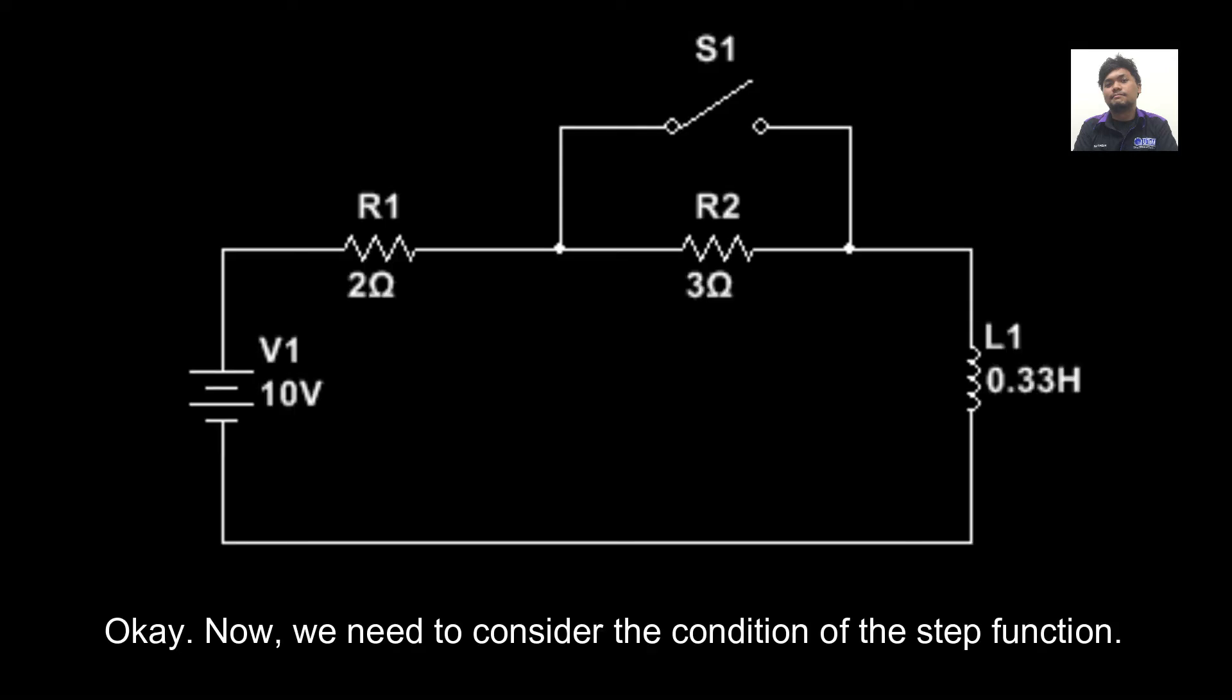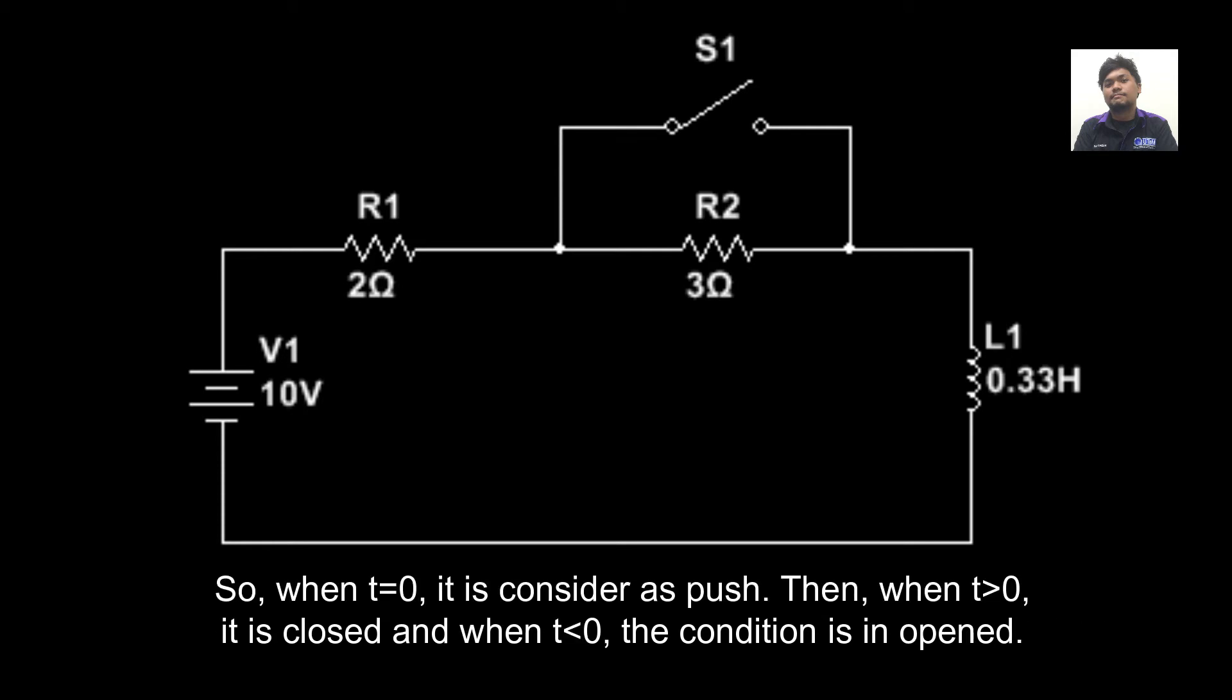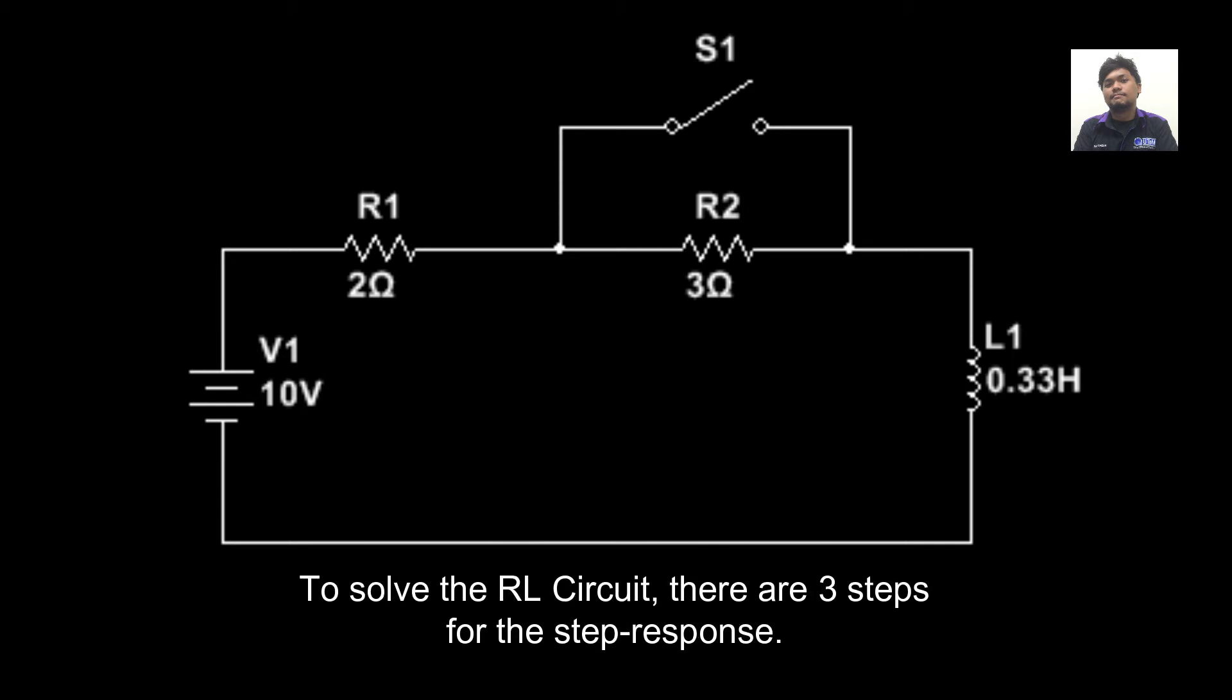Now, we need to consider the condition of the step function. When T equals zero, the switch is considered as closed. Then, when T is greater than zero, the condition is open. To solve the RL circuit, there are three steps for the step response.